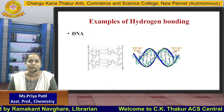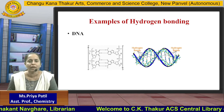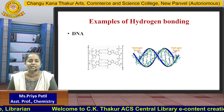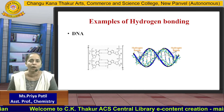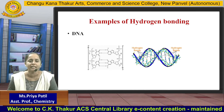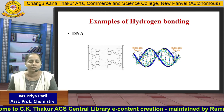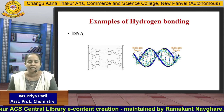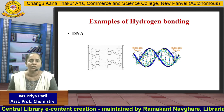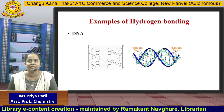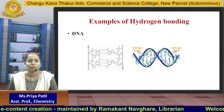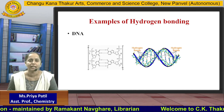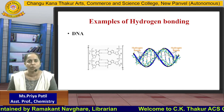A well-known example of hydrogen bonding is DNA, which is present in our cells. There are 4 nucleotides: Adenine, Thymine, Guanine, and Cytosine. Hydrogen bonding is formed between Adenine and Thymine, in which 2 hydrogen bonds are present. Another hydrogen bonding is formed between Guanine and Cytosine, in which 3 hydrogen bonds are present.